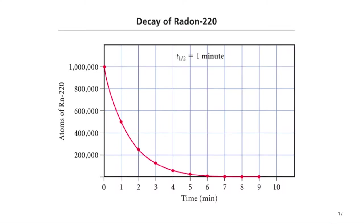All right, so just a couple words on half-life. Again, they can vary widely. So the half-life for radon-220 is one minute. So every minute you're losing half of those radioactive isotopes.